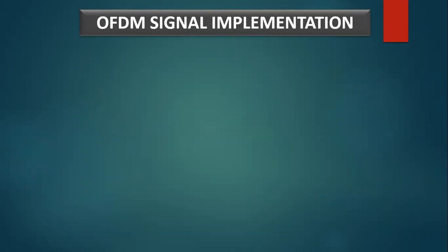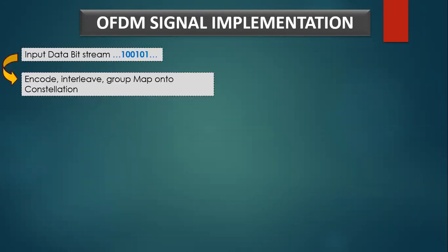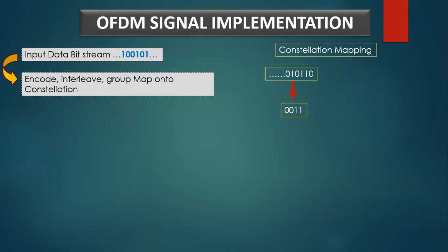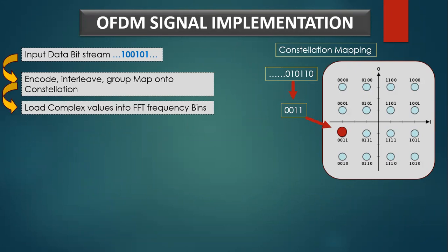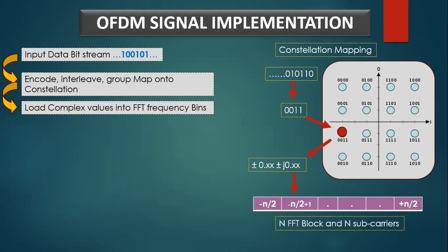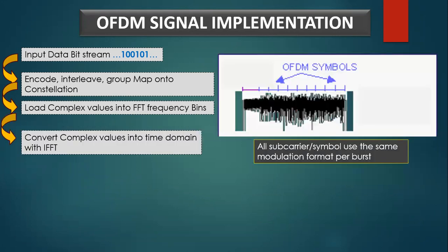Now OFDM signal implementation is discussed in detail. To begin the OFDM signal creation process, the input data bit stream is encoded, and convolutional coding and interleaving are performed. Each data stream is divided into groups of bits and converted into complex numbers representing the mapped constellation points. Then bins of the IFFT block are loaded with constellation points mapped to frequency indices. When the IFFT block is completely loaded, the Inverse FFT is computed, giving a set of time domain samples representing the combined OFDM subcarrier waveform.